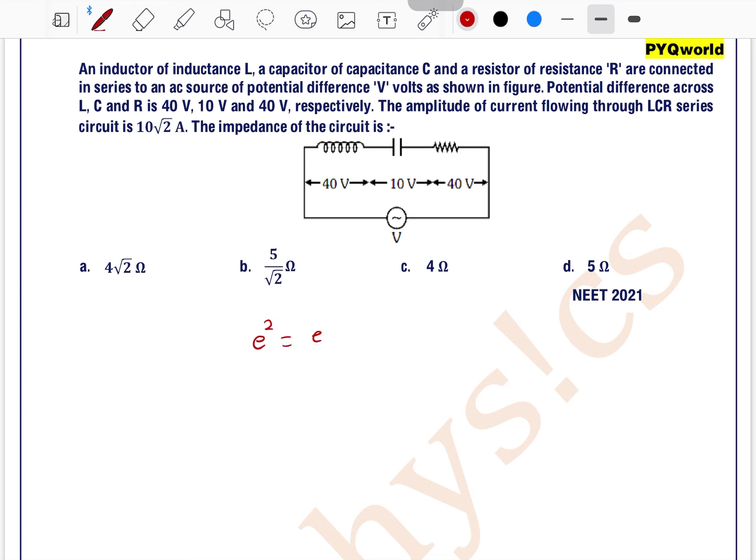We know that the voltage across all the components can be written as E² = ER² + (EL - EC)². So, ER can be written as voltage across resistor is 40, 40² plus (40 minus 10) whole squared. So, this is equal to 40² plus 30². 40² plus 30² is 50².